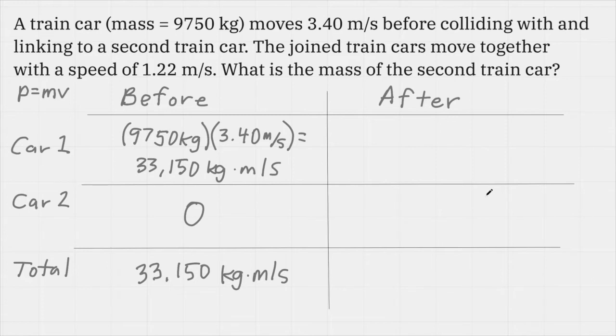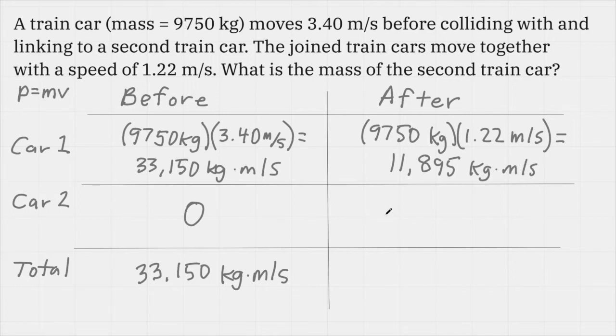After the collision both cars are moving together with a speed of 1.22 meters per second. So again we can easily calculate the momentum of car 1 by multiplying the mass times the velocity. The new velocity is 1.22 meters per second. That value is 11,895 kilogram meters per second. We don't know the mass of car 2, so I'm going to leave that as a variable. I'm just going to call it m subscript 2. Since the cars are linked together, they're moving the same speed.